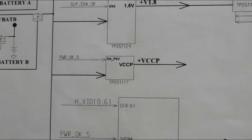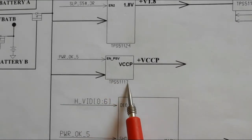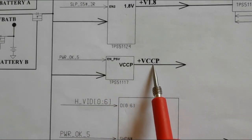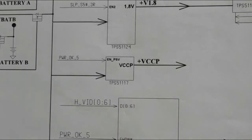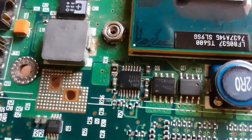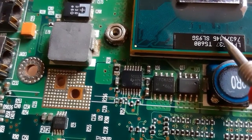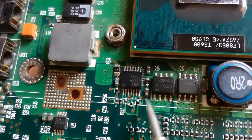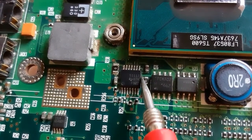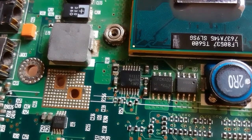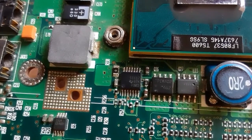Now let's see the plus VCCP power management IC, the TPS51117. The plus VCCP will be applied to the processor and other chips in the motherboard. This IC should be near to the processor. Here we have the processor, and here we have the IC — TPS51117. This IC generates plus VCCP for the processor and for other chips like the PCH or GMCH.